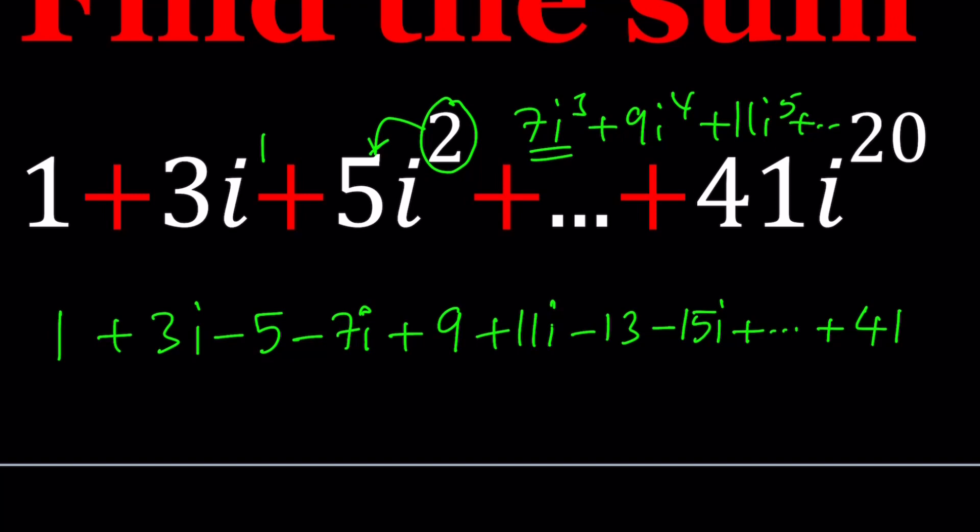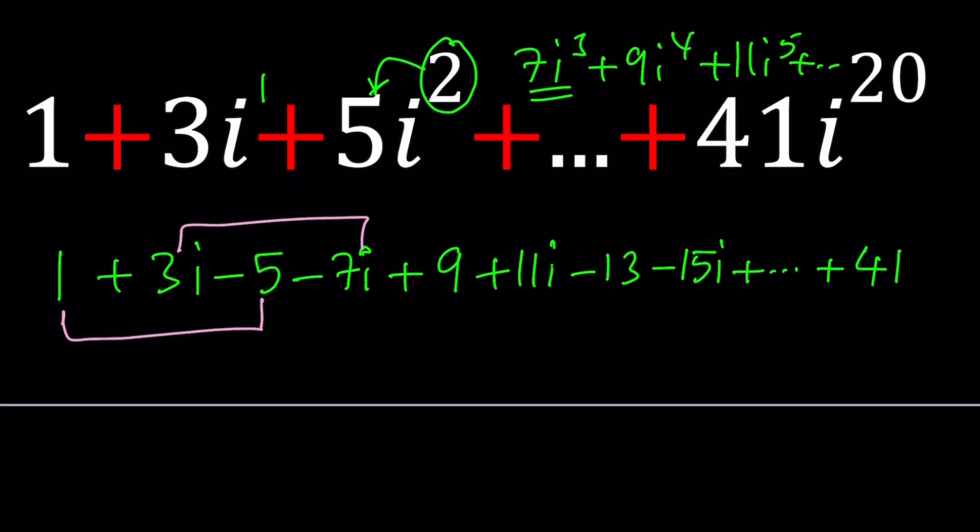You can exclude the 41 and kind of look at it as a group of four, or just include it. Let's see how we can handle this. I'm going to look at this in two different ways. First approach: I'm going to put these two together and these two together because they're kind of like terms. 1 minus 5 is negative 4, and then 3i minus 7i is negative 4i. Awesome.